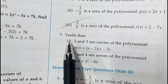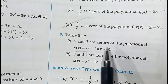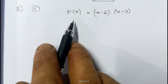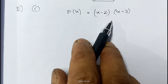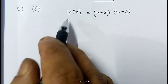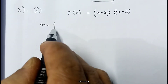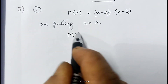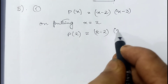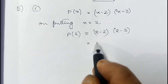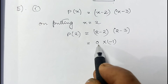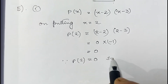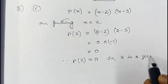Question 5: verify that 2 and 3 are zeros of the polynomial p(x) = (x minus 2)(x minus 3). On putting x equals 2, p(2) equals (2 minus 2) into (2 minus 3), which is 0 into minus 1, equals 0. Since p(2) equals 0, therefore 2 is a zero of the polynomial p(x).